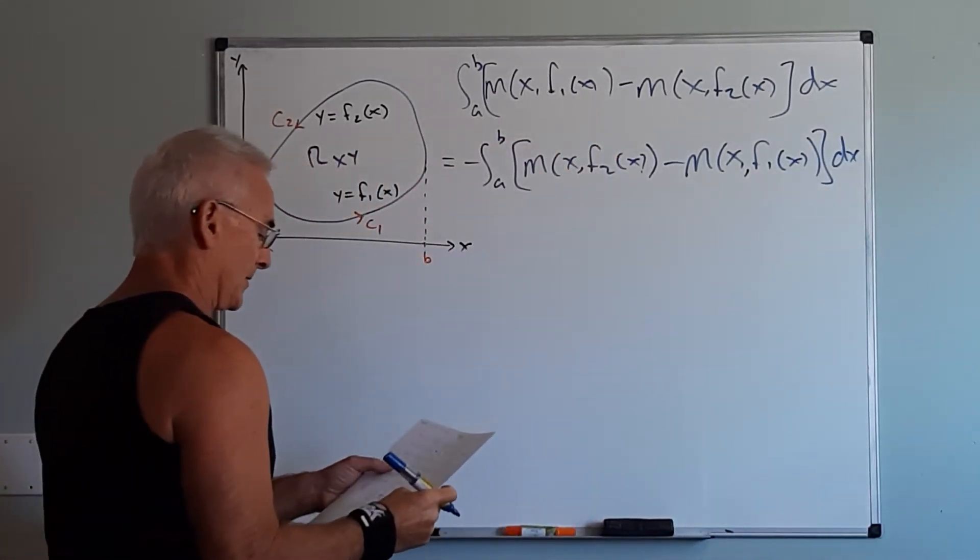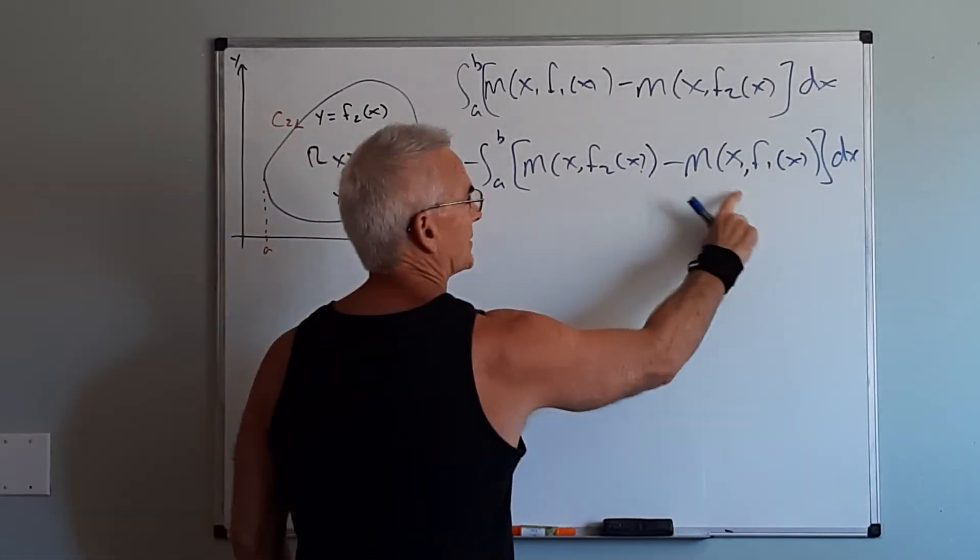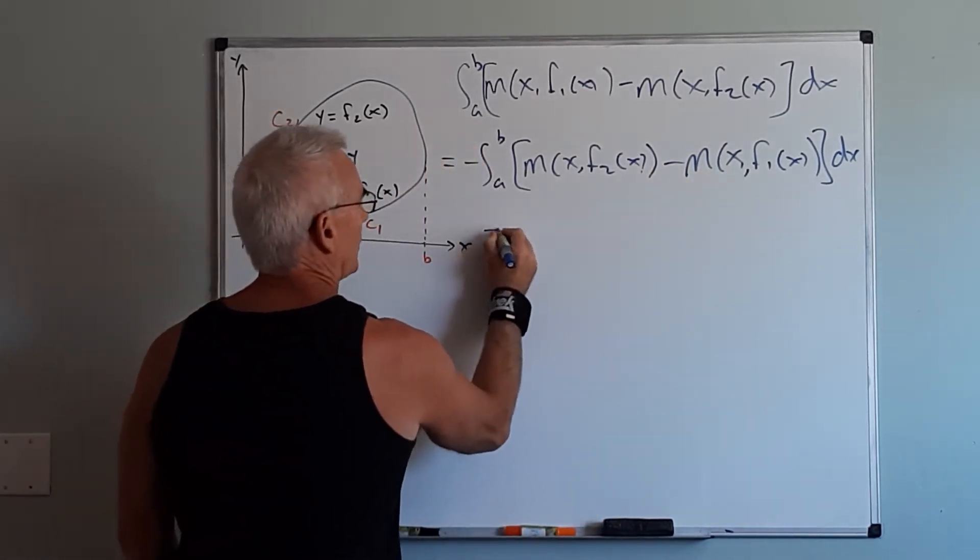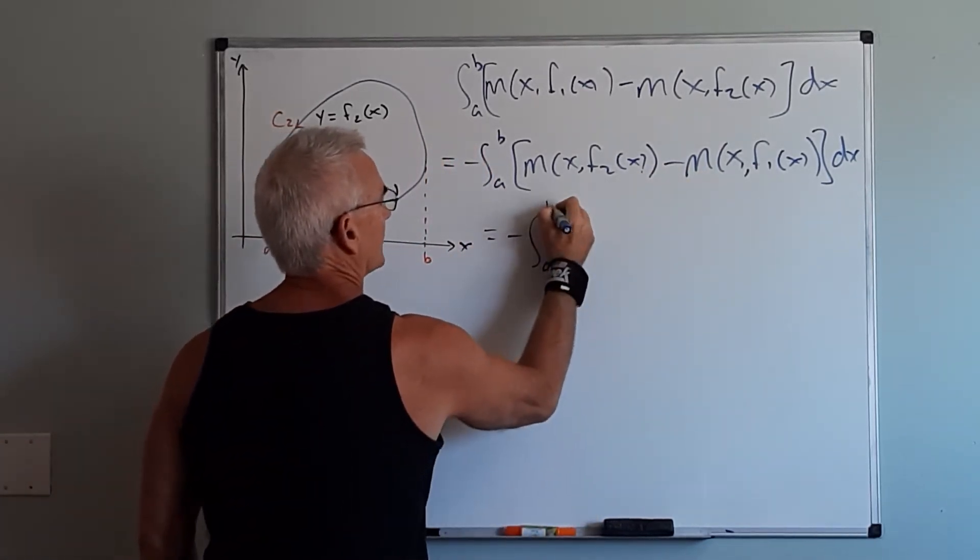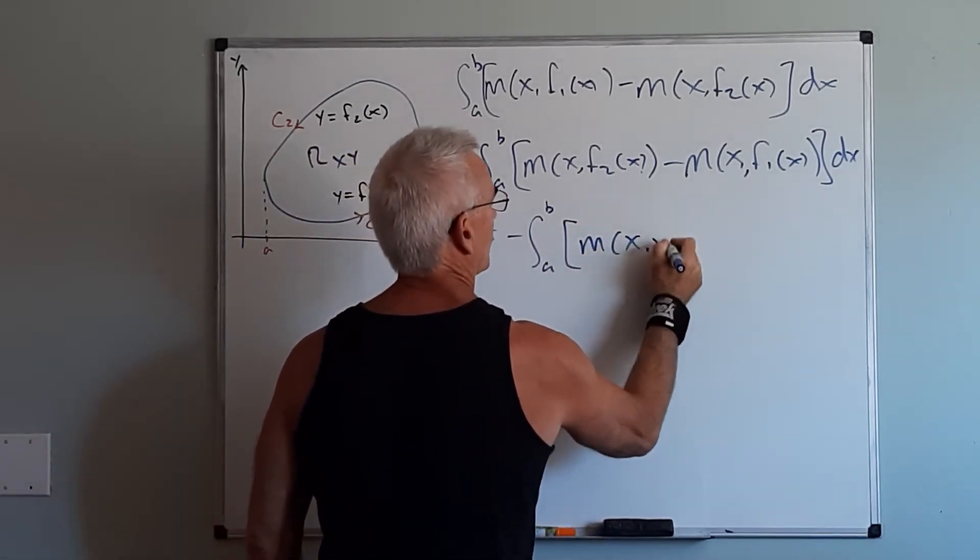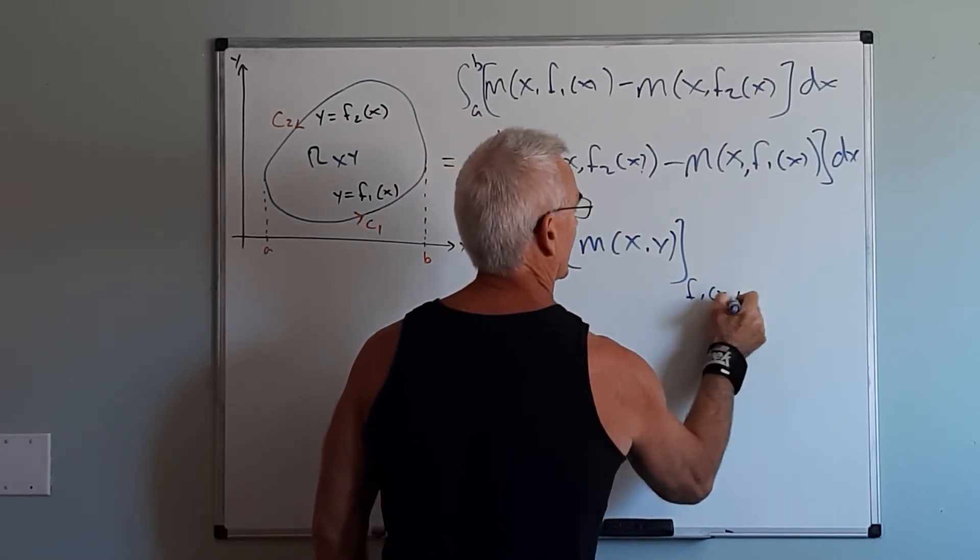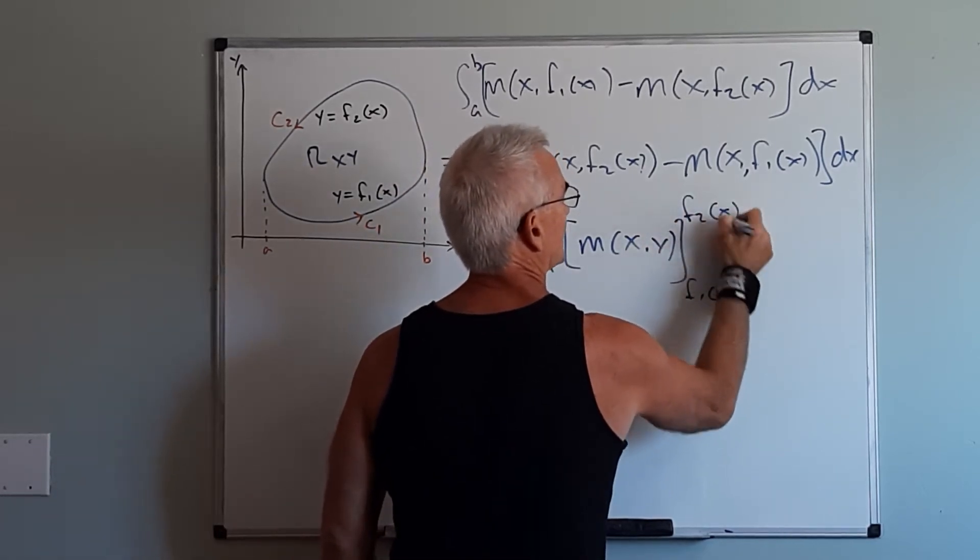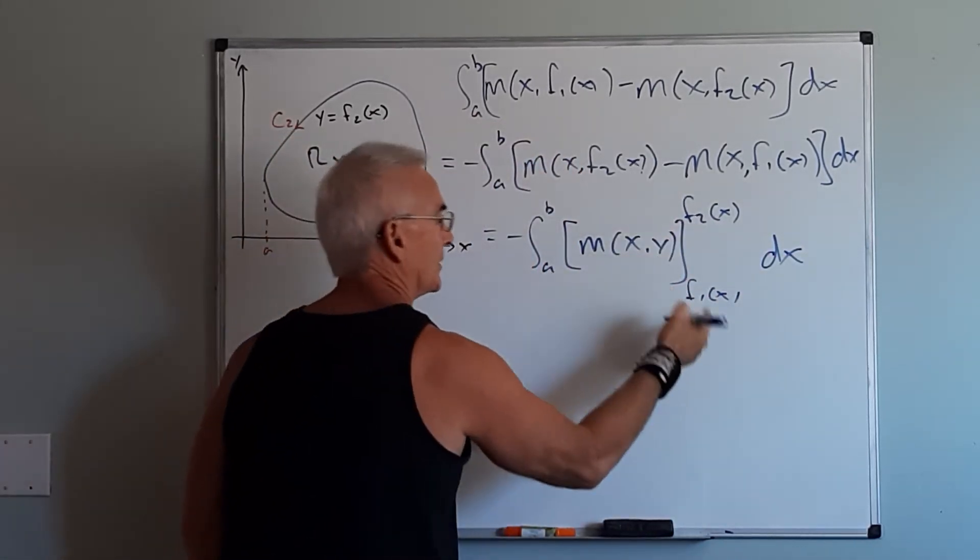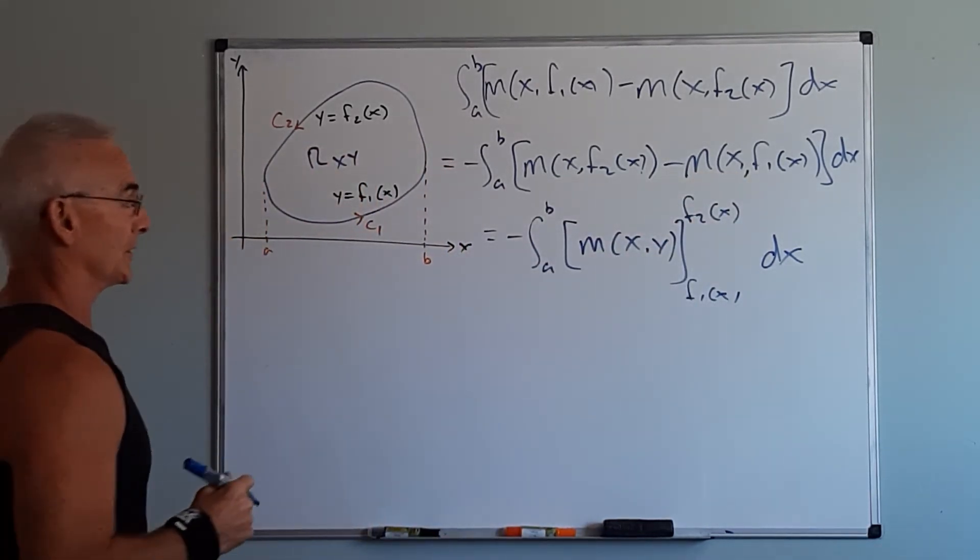Now when we look at that right there, that kind of looks like a double integral that's already been evaluated at f1 and f2. So we could think of this in the following form. We could think of this as m of x,y evaluated from f1 of x to f2 of x dx. If I substitute it in here I would get the same thing. But then that means this was the result of a double integral.